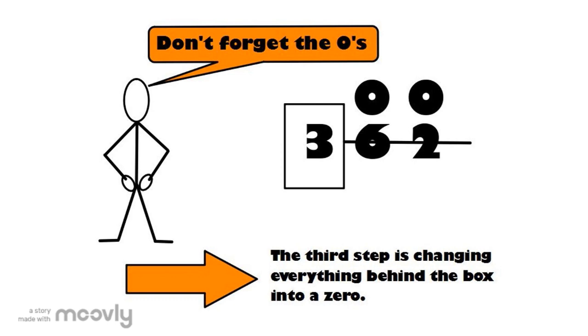Then, once you've crossed all the numbers out, turn those numbers into zero like this, by writing zeros above the number.